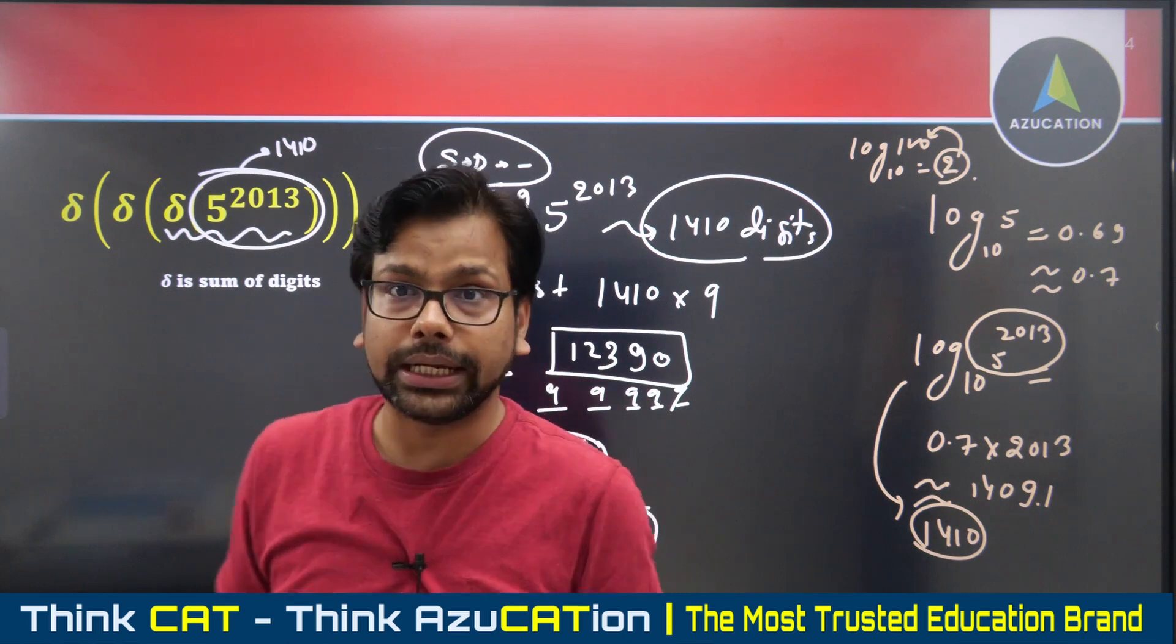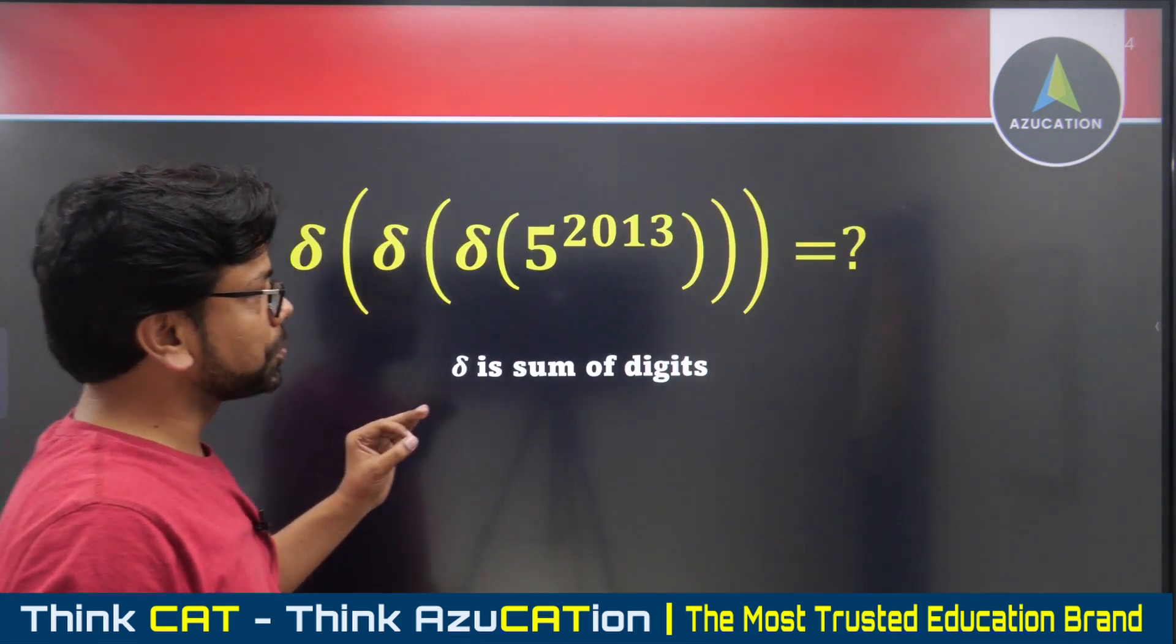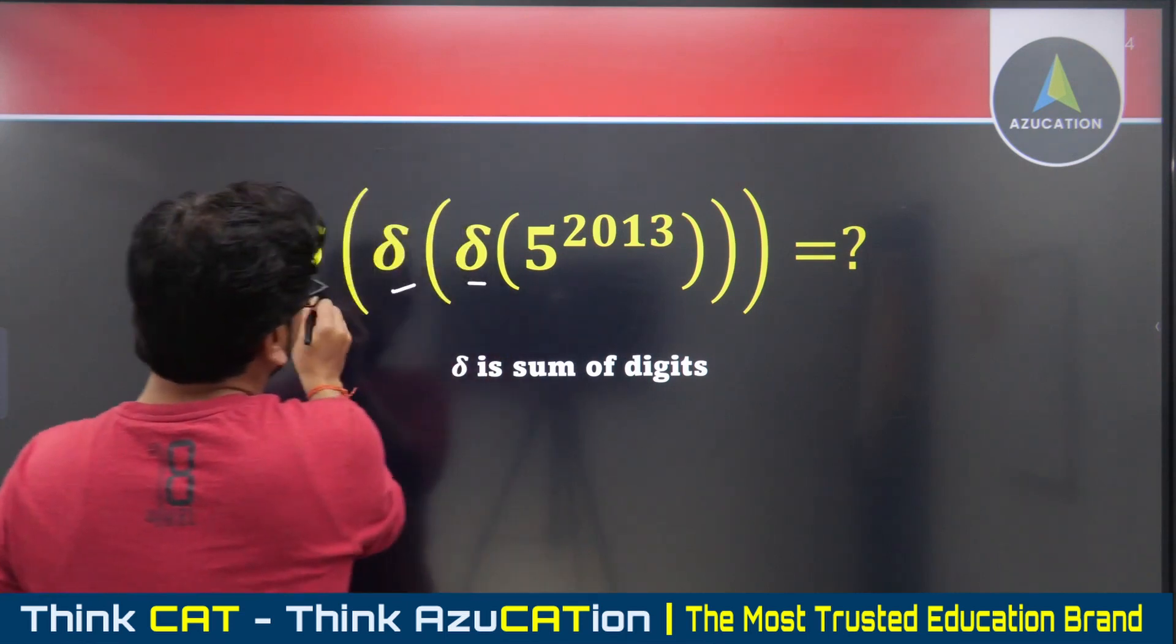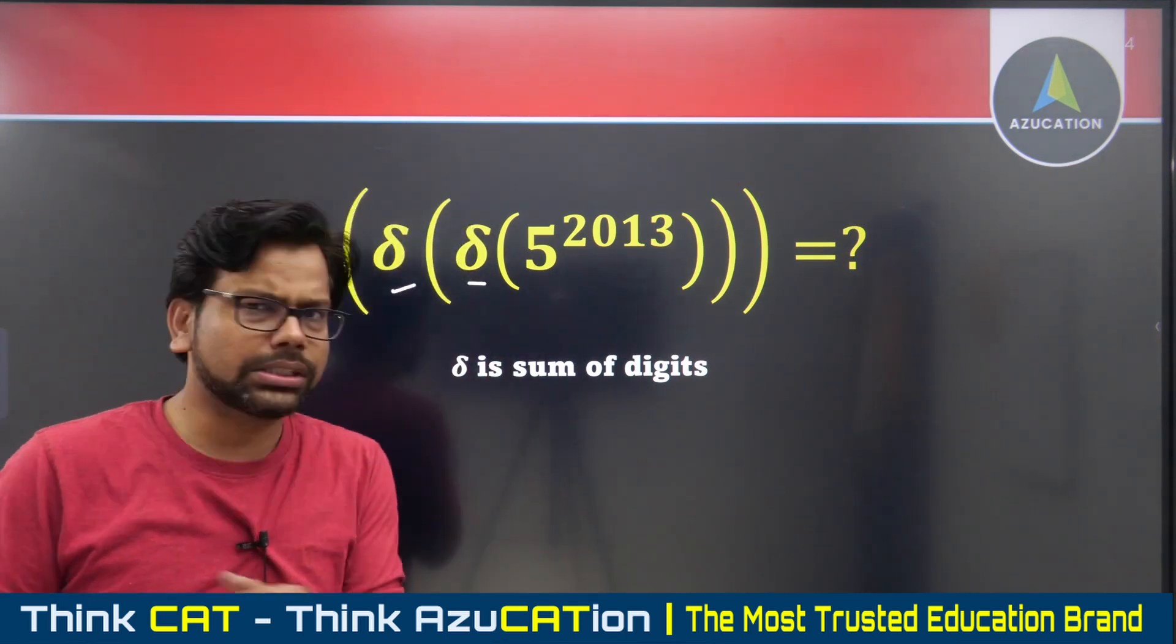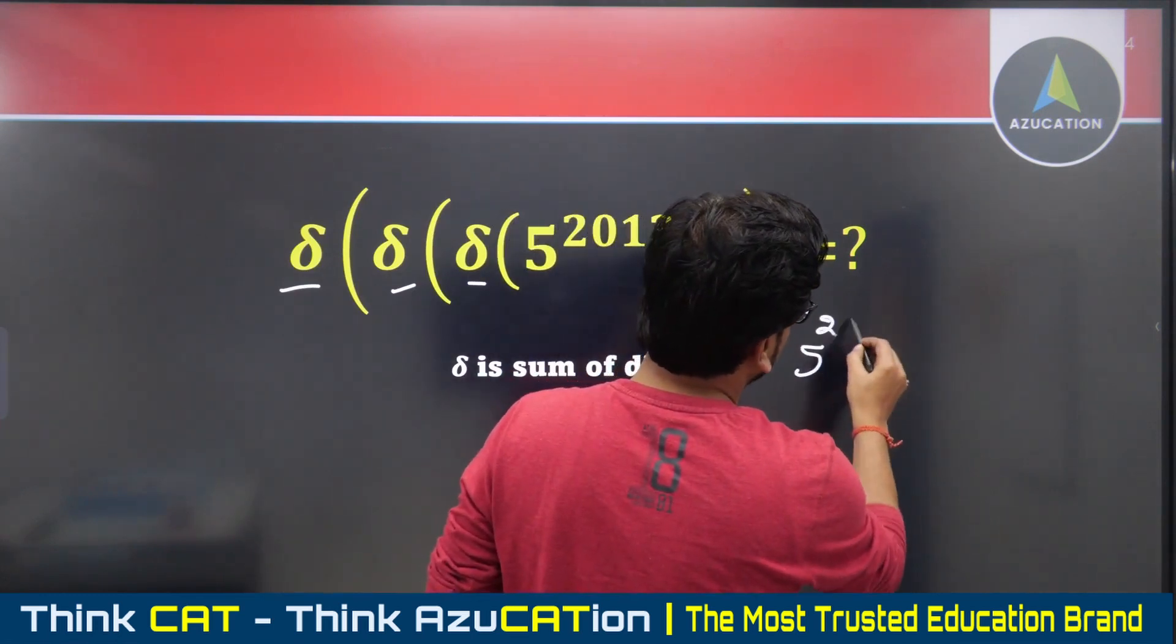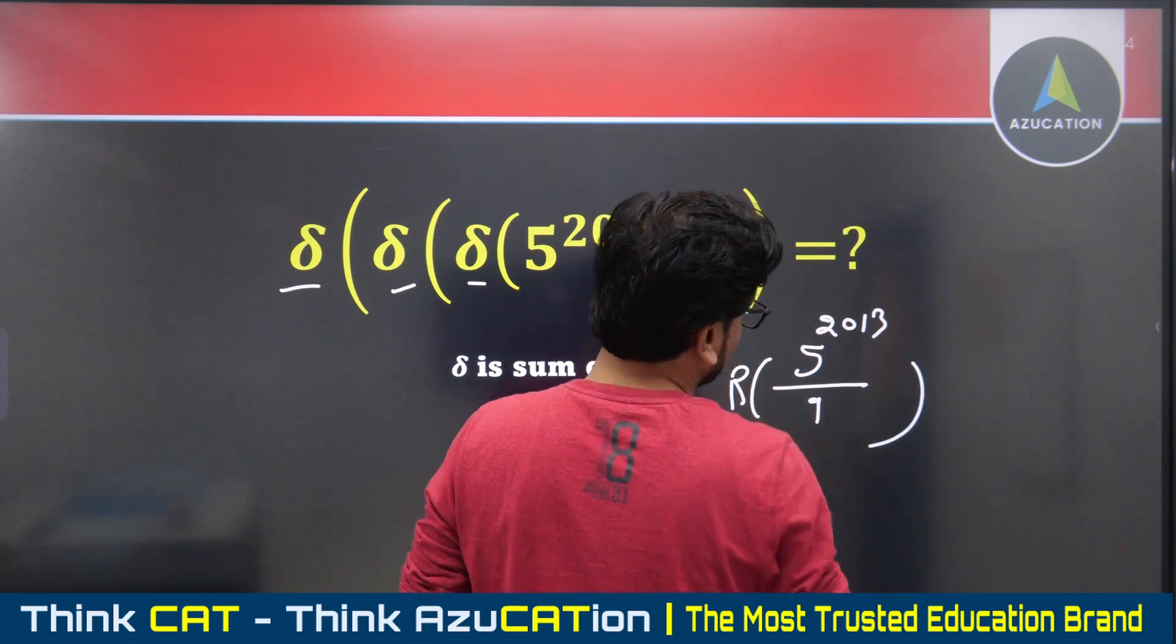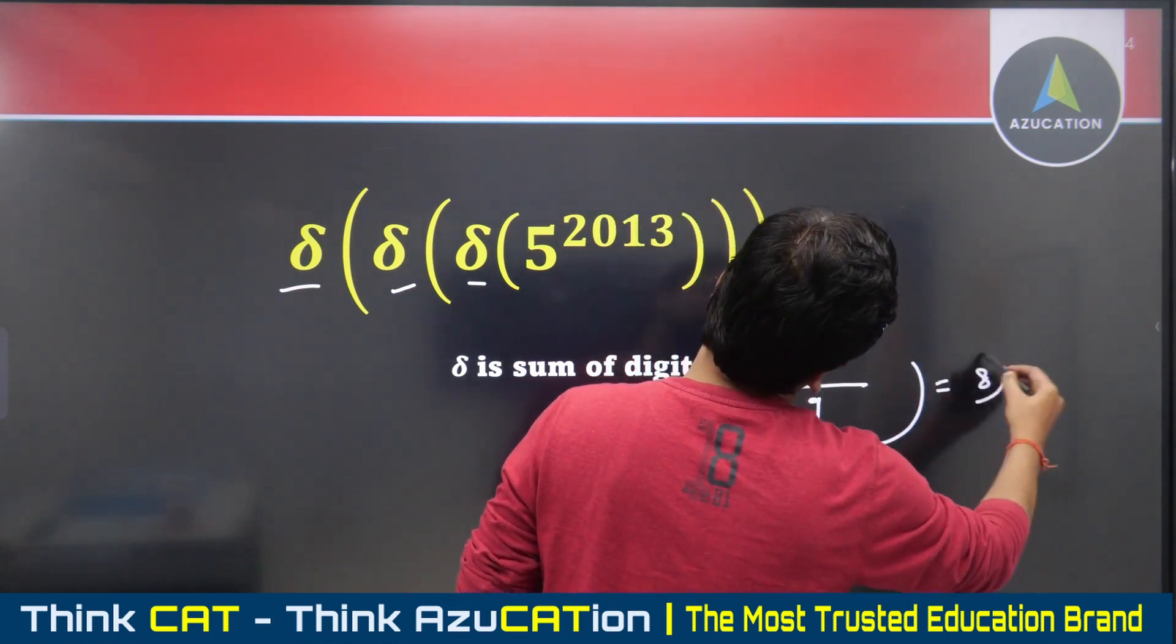So whenever you have a question with multiple sum of digits in aptitude examinations, since you don't have a calculator, 110% the answer is: 5^2013 divided by nine, the remainder would be the answer. The answer we calculated is eight.